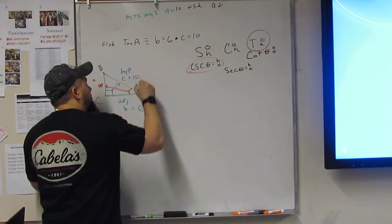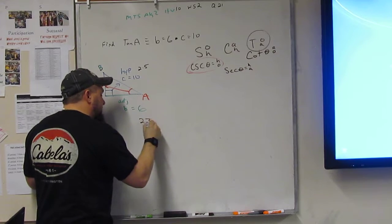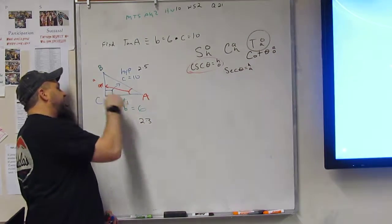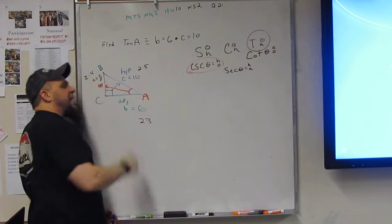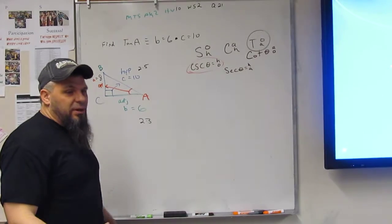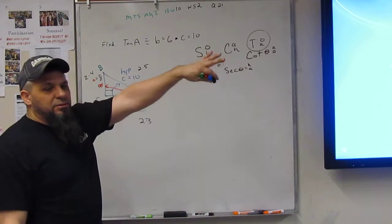Because 2 times 5 is 10, and 2 times 3 is 6. So that means this is a 3, 4, 2 times 4, so A has to be 8. Now I could have done A squared plus B squared equals C squared, but remember, use your triangles, the triples, any time you can.